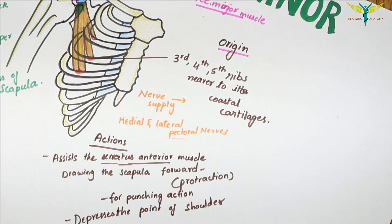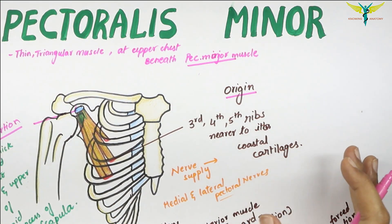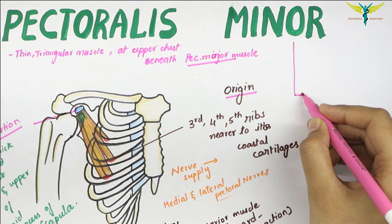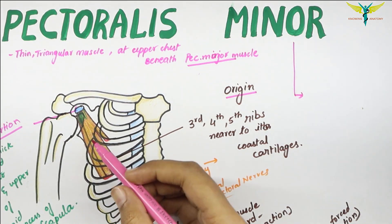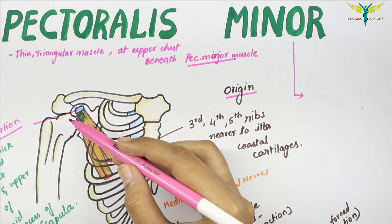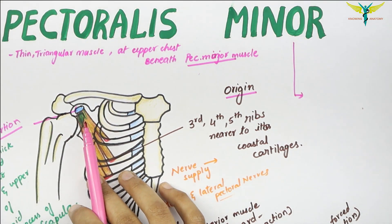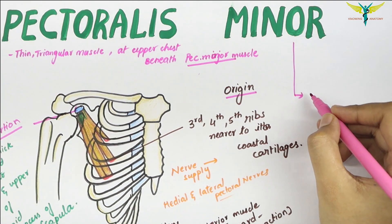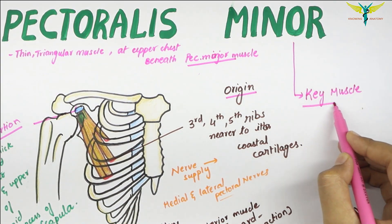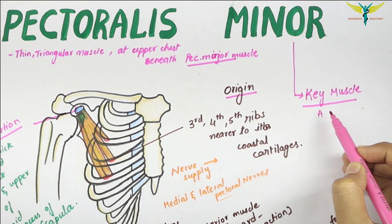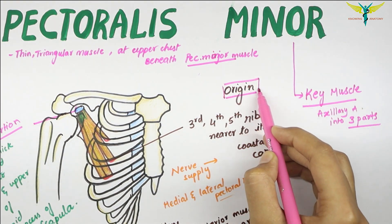An important point to remember: the pectoralis minor is considered the key muscle of the axilla because it crosses in front of the axillary artery and divides this artery into three parts. For a video on the axillary artery, you can click on the 'i' button.